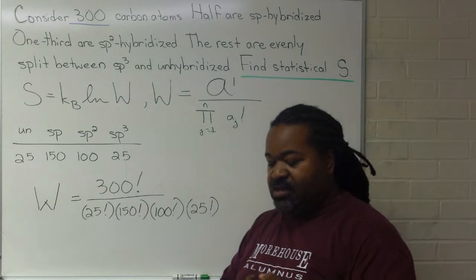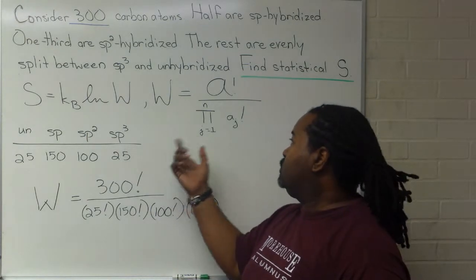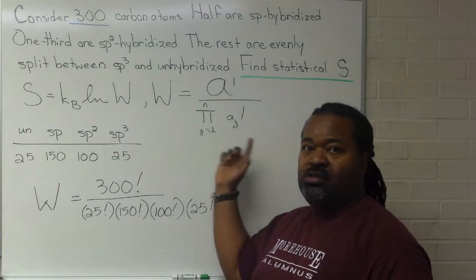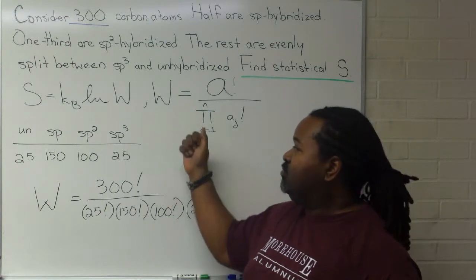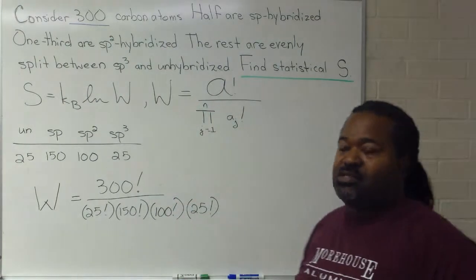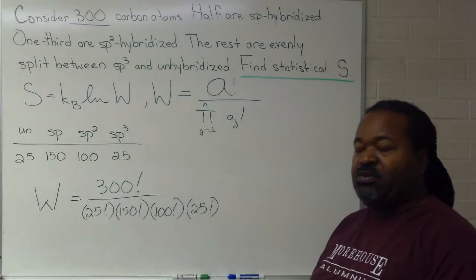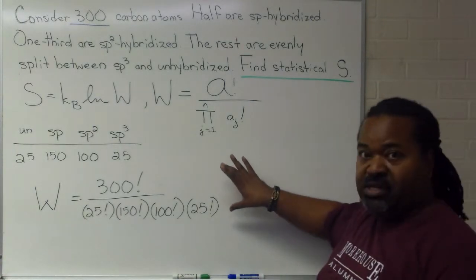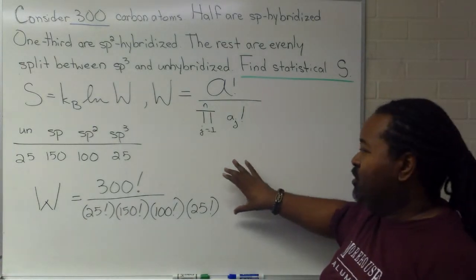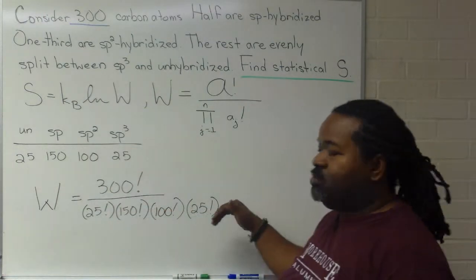Now, you'll note that the total number of particles spread across all of the possible states must equal the total number of particles in the system. And so, by applying that rule, we can then plug into some kind of computer to calculate these factorials.